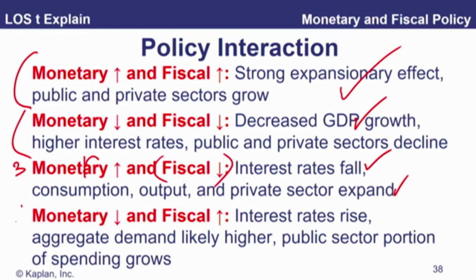Finally, number four — the opposite: monetary is now contractionary, therefore interest rates will rise. But fiscal is expansionary, so the most likely impact is we will still see growth in aggregate demand. The public sector will expand due to that expansionary fiscal policy. Just be able to tell the examiner the overall impacts of those two together.